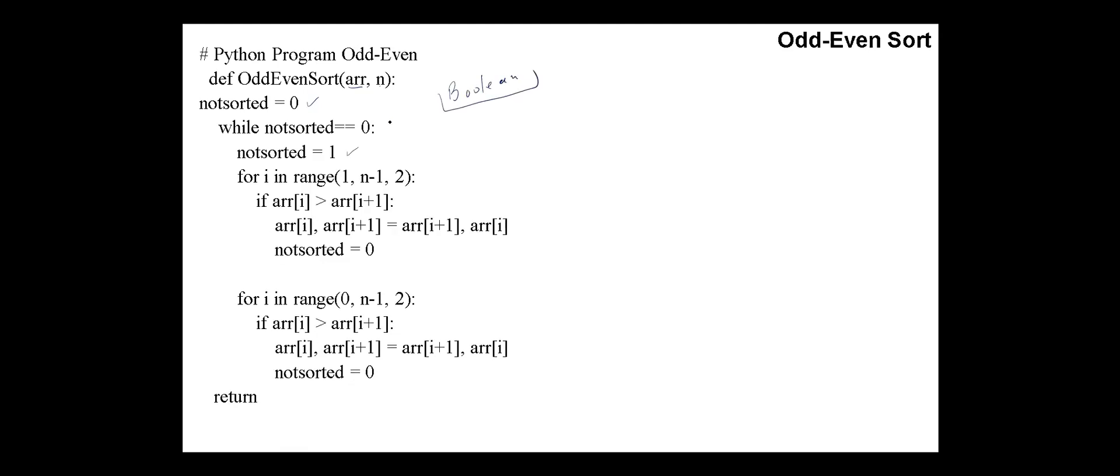Here is the Python program. We have the array and its elements n. First, we have a variable notSorted, initialized to 0. We can use boolean variable here as well. While notSorted equals 0, we perform the two iterations here, odd-even and here, even-odd.